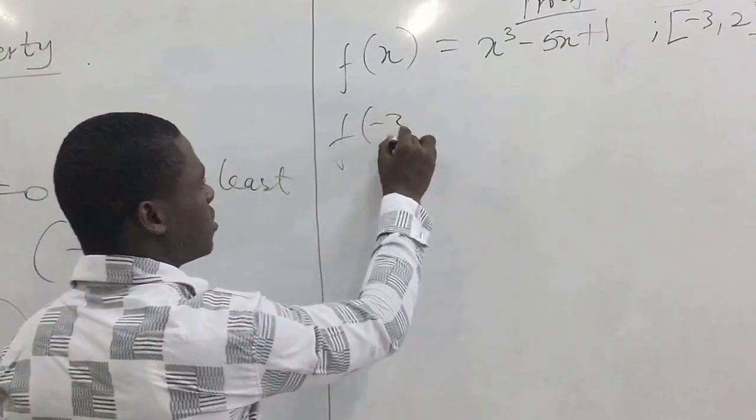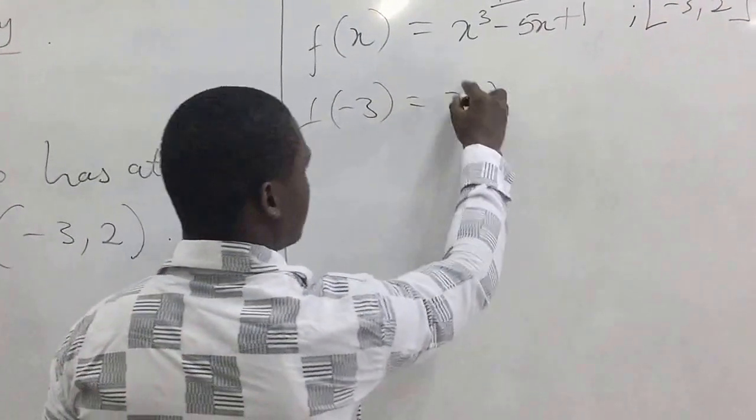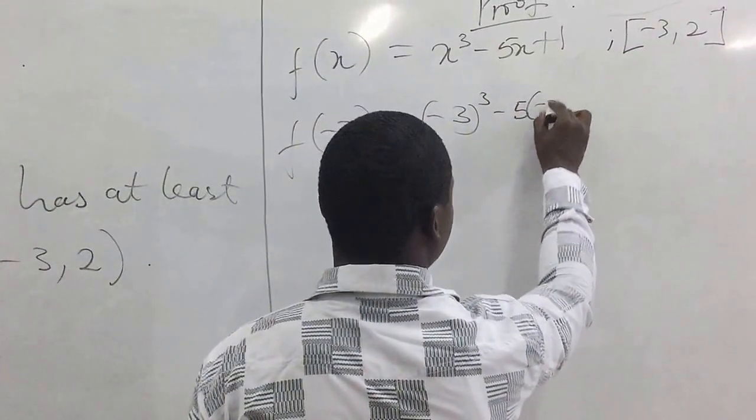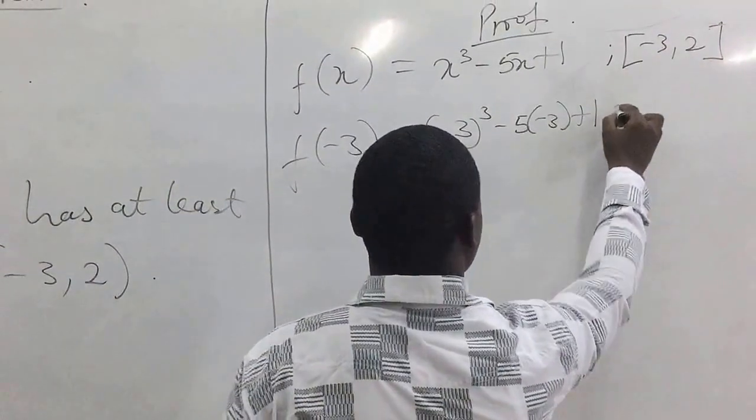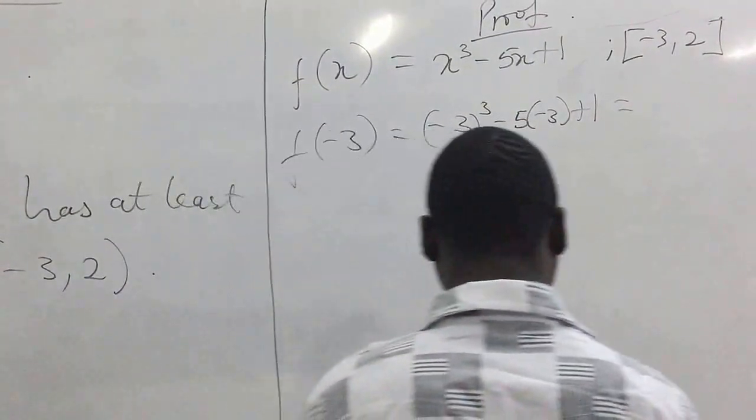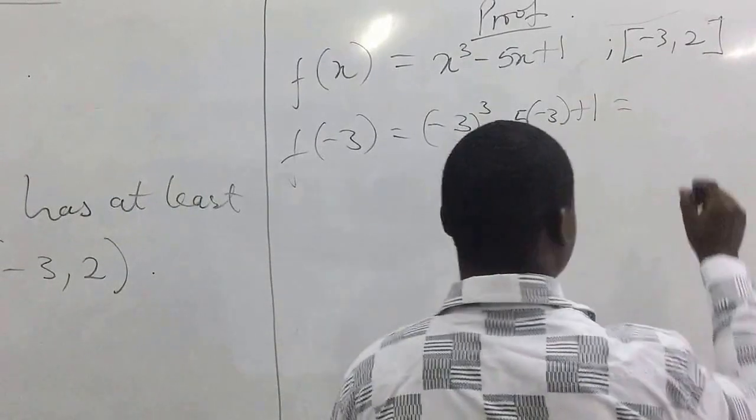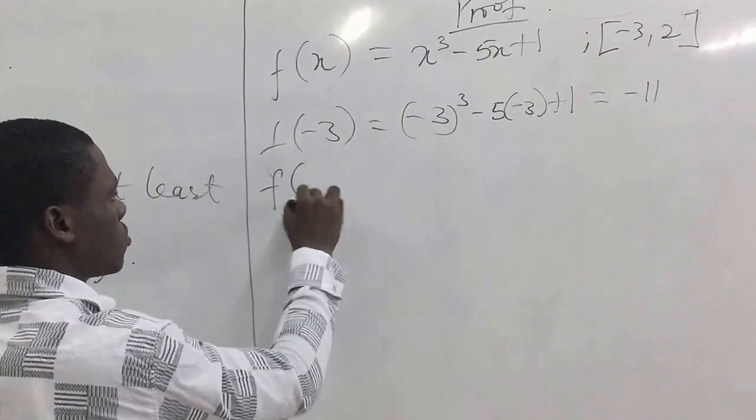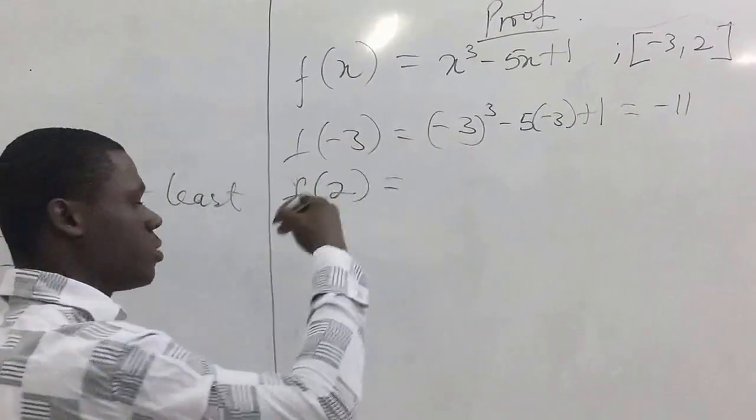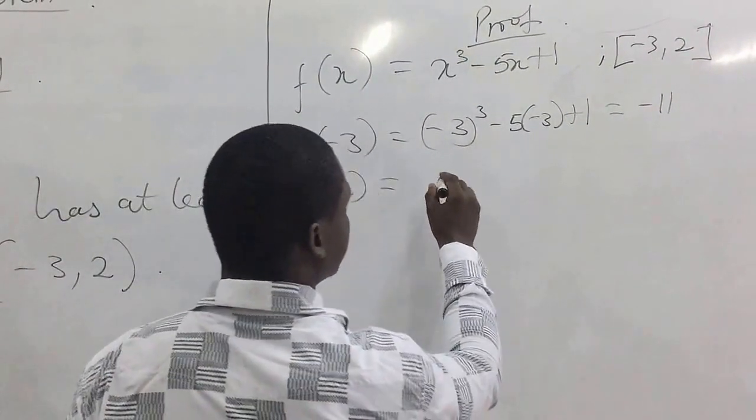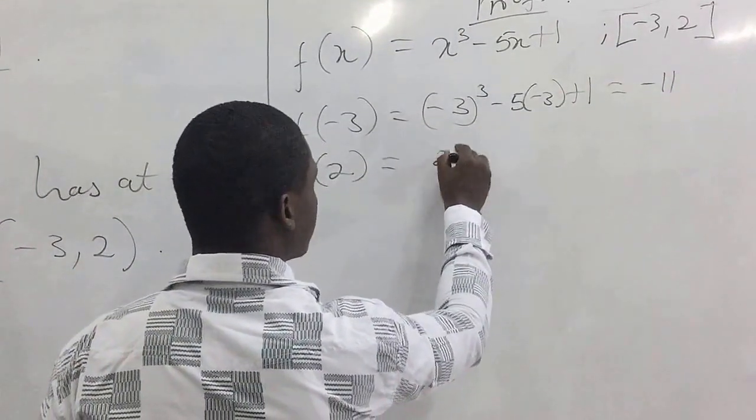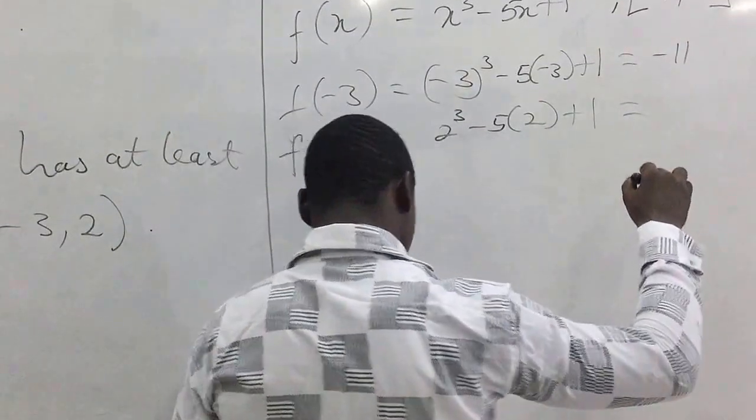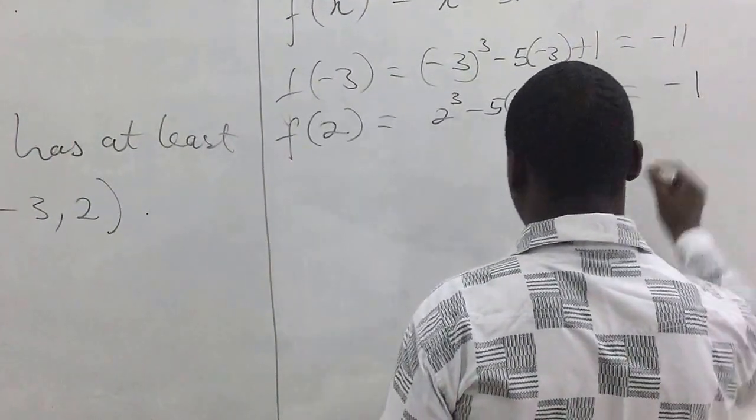We find the function value at -3: f(-3) = (-3)³ - 5(-3) + 1 = -11. Now we substitute 2 into it just to get the extreme values: f(2) = 2³ - 5(2) + 1 = -1.